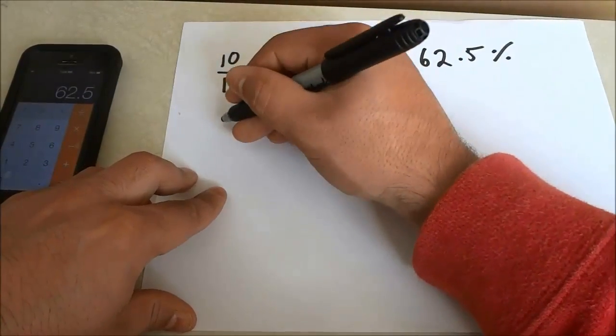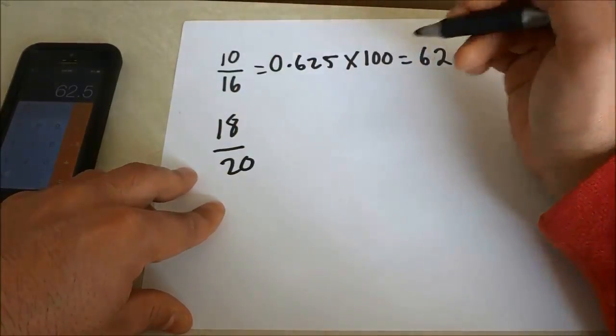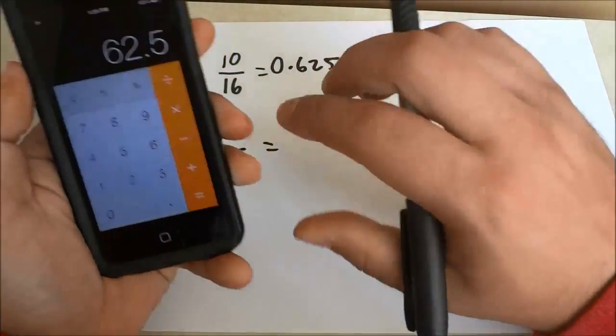So what I will do is I'll just do one more. Let's just say that we got 18 out of 20 on a test. So once again, I'm just going to take 18 and divide it by 20.